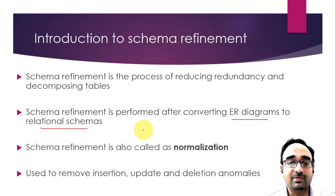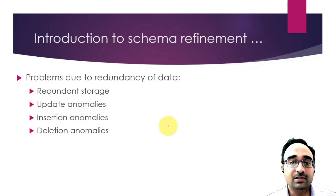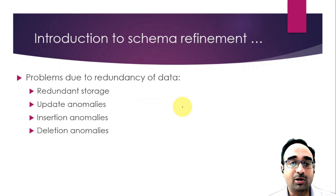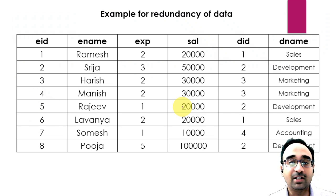The different problems due to redundancy of data are: update anomalies, insertion anomalies, and deletion anomalies. Also, because of duplication of data — redundant data — we will have redundant storage, meaning more storage is occupied. Here is an example: the employees table with six columns.